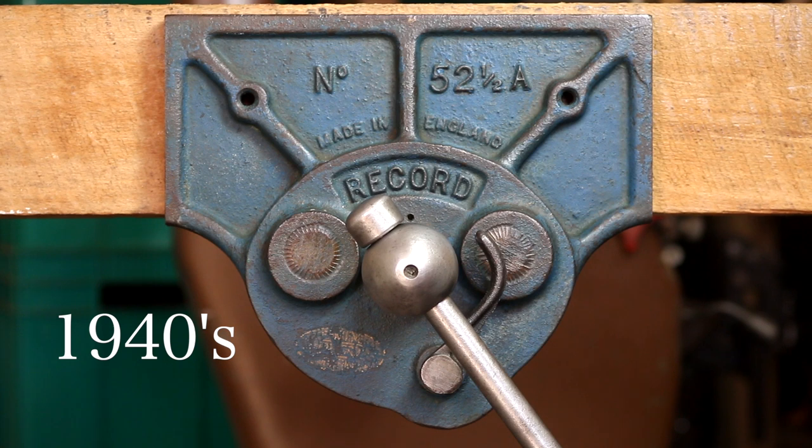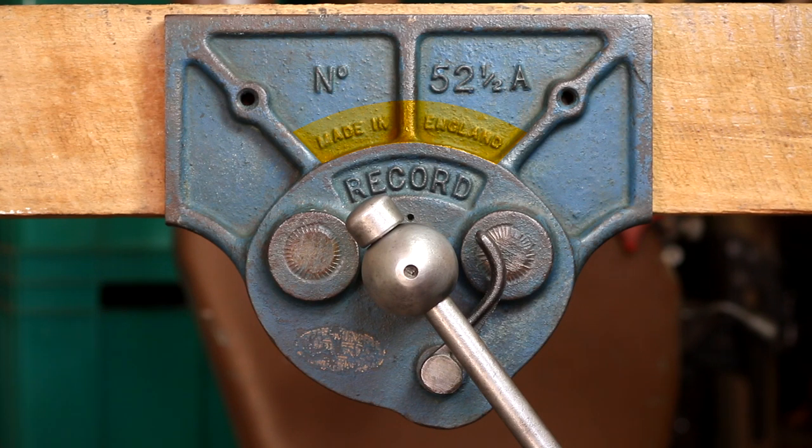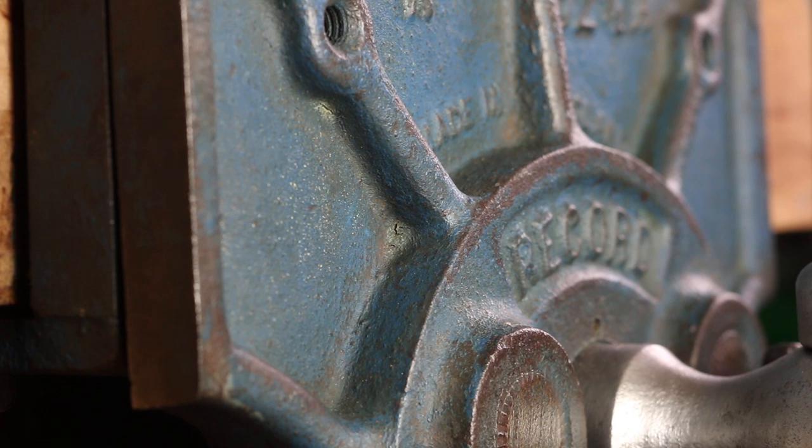In the 1940s version, introduced perhaps after World War II, Record eliminated the registered design number from the faceplate as it was no longer valid. In addition, the Made in England stamp has been moved to the base of the fins. Also, the round-over of the 1930s rostrum has been replaced by a more aggressive right-angle design.